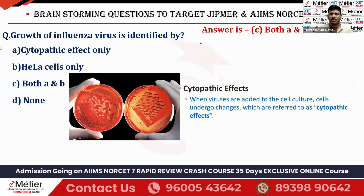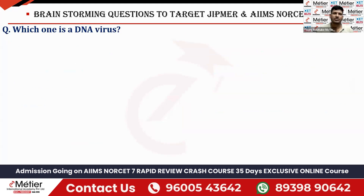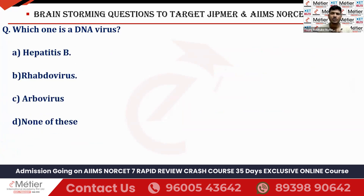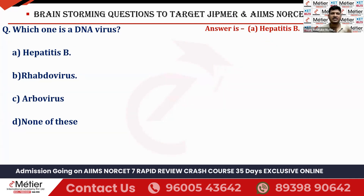The next question: which one is a DNA virus? This is commonly asked in both SIGMA and AIIMS exams — they ask either RNA virus or DNA virus questions. The four options are: hepatitis B, rhabdovirus, arbovirus, and none of these. The right answer is option A — hepatitis B. All other viruses like rhabdovirus and arbovirus come under RNA viruses.